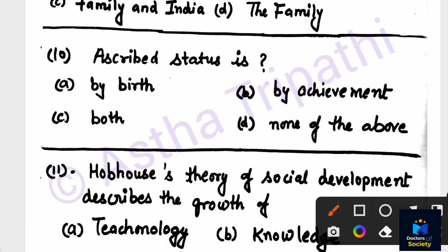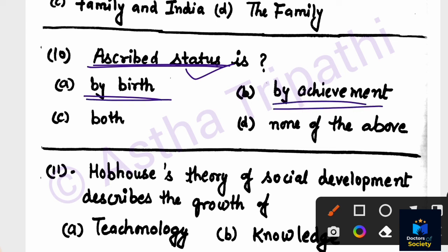Question number ten: What is 'Ascribed Status'? Options are: by birth, by achievement/yogyata, both, or none. The answer is option A — by birth. Ascribed status is given by birth, while achieved status is earned through one's own efforts.